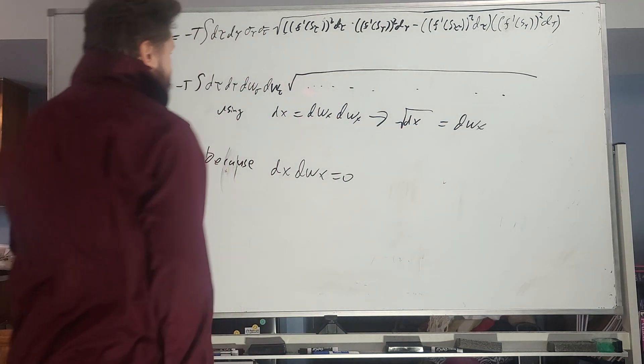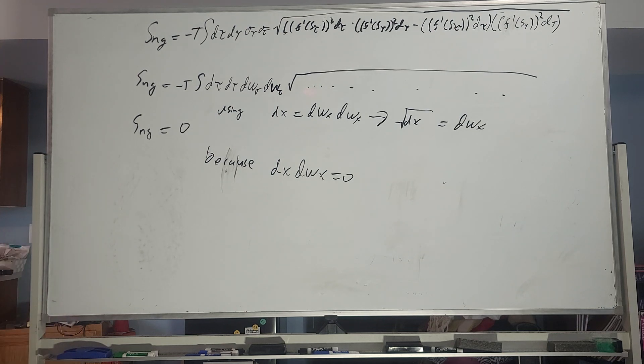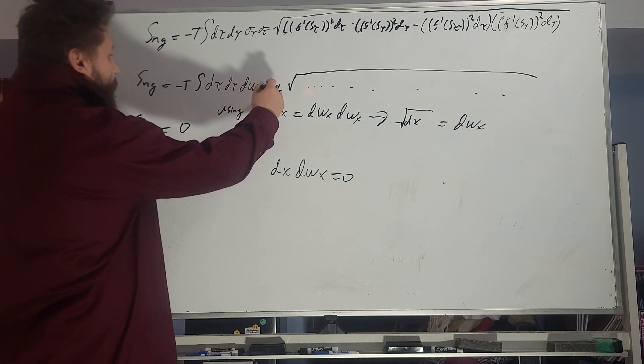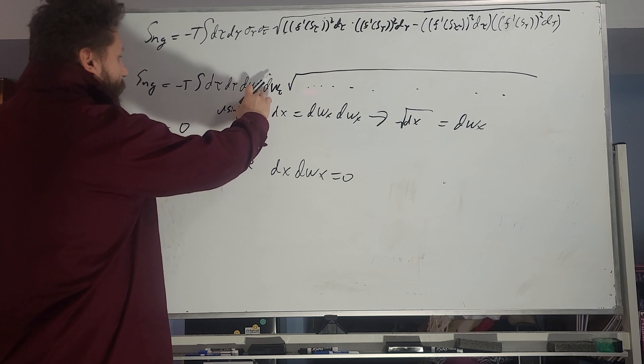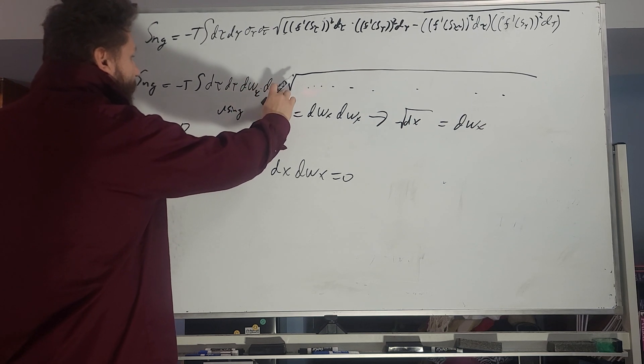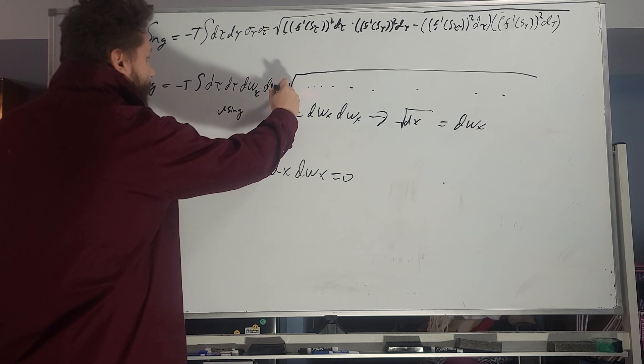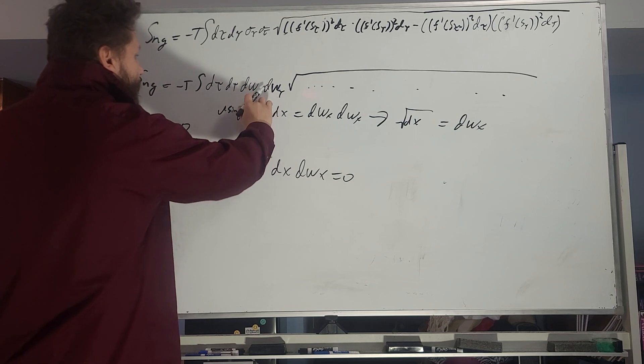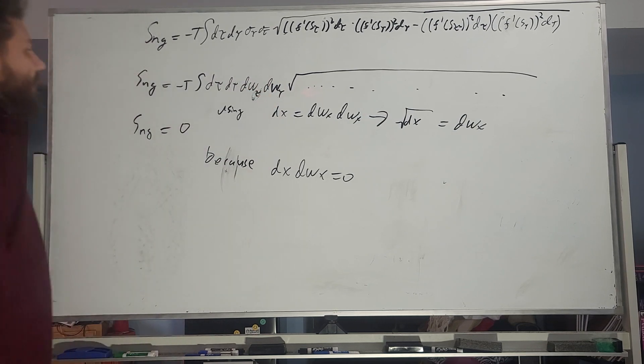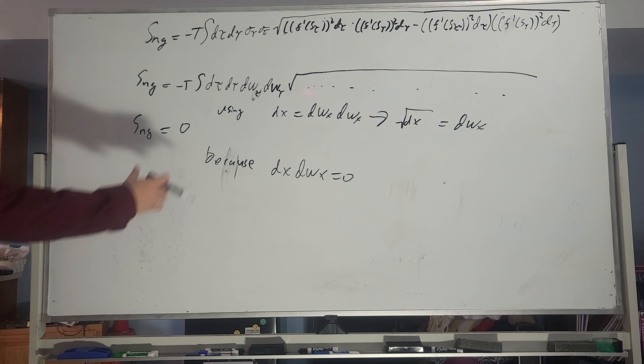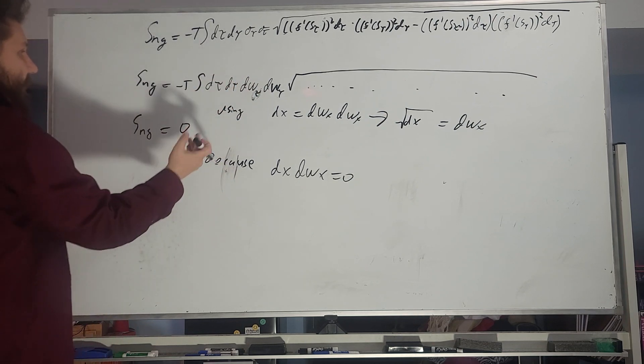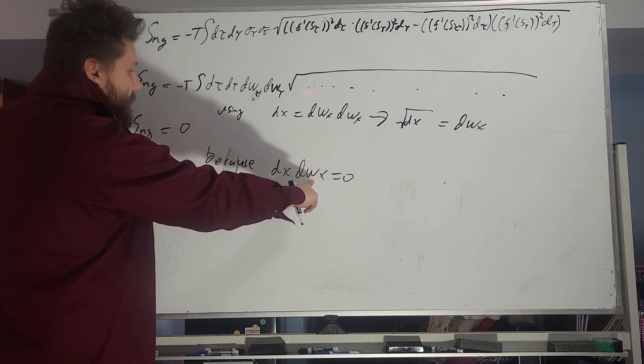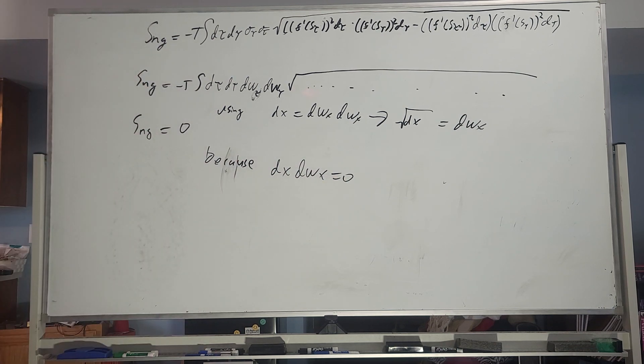But then when you do that, you get DW tau, wow, tau, and then you get this gamma right here, so this is tau. Cool. All right, so when you multiply these all together, the problem is that DX DWX equals zero. So,